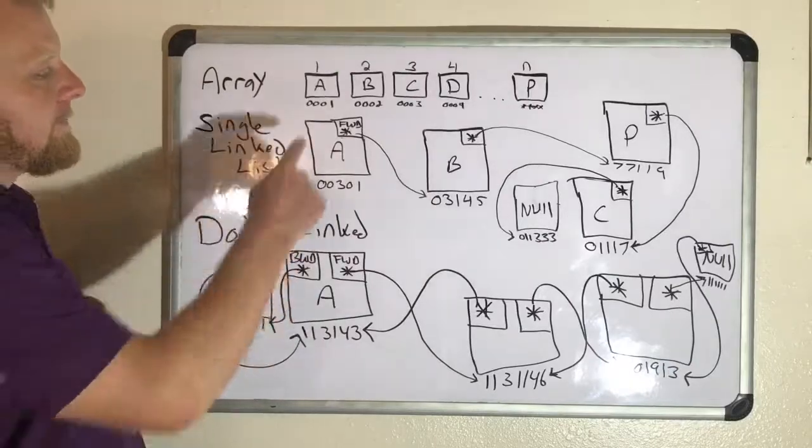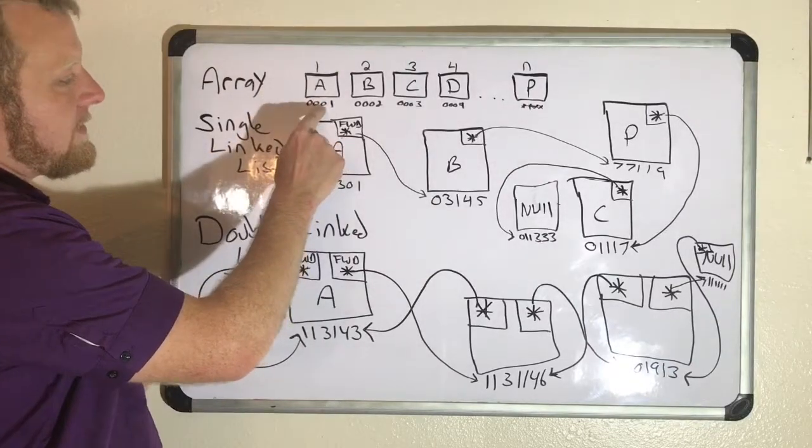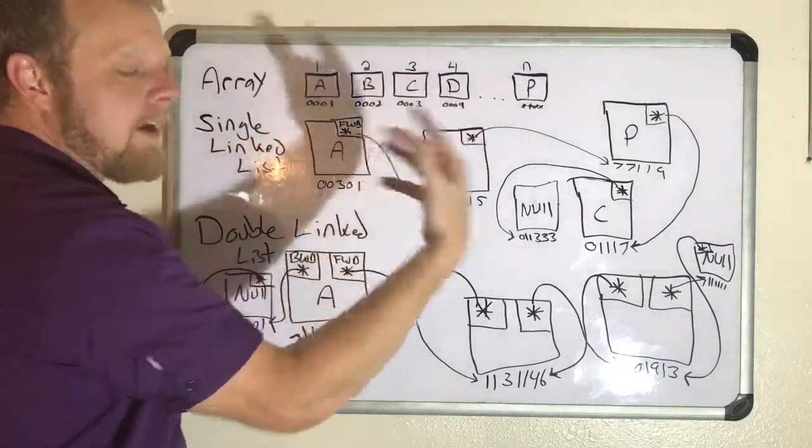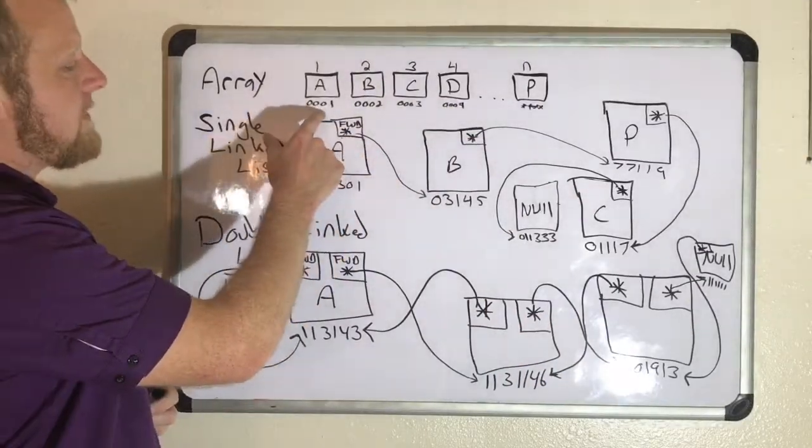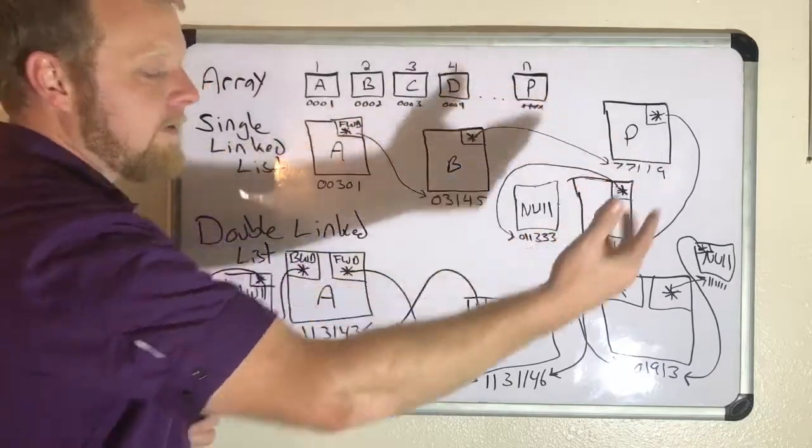As you can see, I drew it out here. And these memory locations, those are 1, 2, 3, 4. See how they're continuous? It's going to be some hexadecimal number, but for demonstration purposes, they're in order: 1, 2, 3, 4, 5, 6, 7.